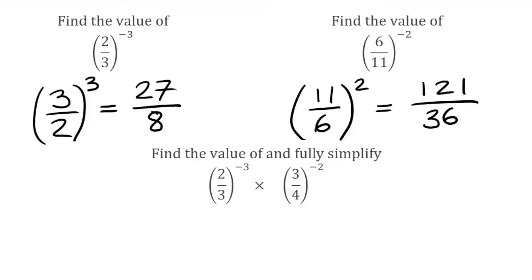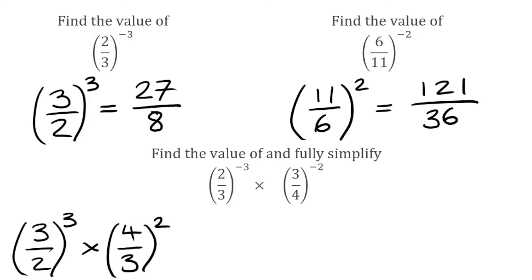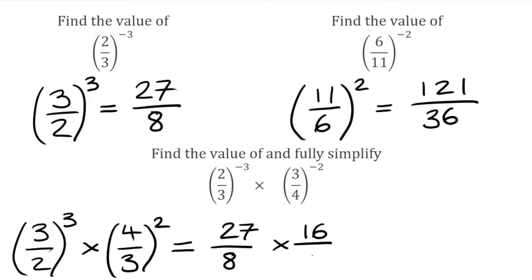For our final question, we've got 2 thirds to the power of negative 3 multiplied by 3 quarters to the power of negative 2. Negative indices mean we take reciprocals and flip the fractions. So 2 over 3 becomes 3 over 2 to the positive power of 3, multiplied by 4 over 3 to the positive power of 2. Applying the powers: 3 cubed is 27 over 2 cubed which is 8, multiplied by 4 squared which is 16 over 3 squared which is 9. Multiplying through: 27 times 16 is 432, over 8 times 9 which is 72. Fully simplifying: 432 divided by 72 equals 6.